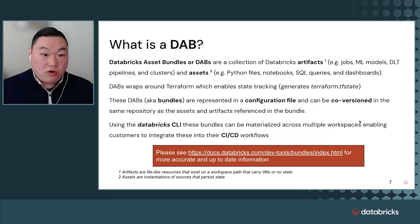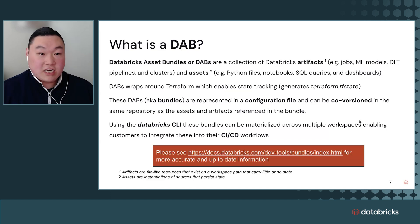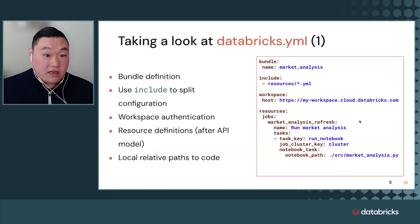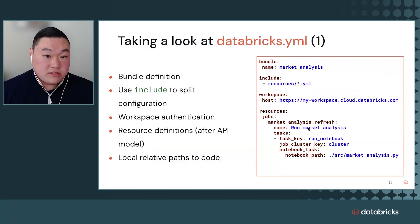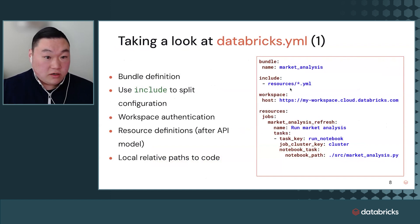Using the Databricks CLI, these bundles can then be materialized across multiple workspaces, enabling customers to integrate them into CI-CD workflows such as GitHub Actions. The Databricks YAML configuration at the top level includes the bundle definition name and uses the include argument to reference resources. For those familiar with Terraform, you can also use resources here, but you can divvy this up any way you like — maybe apps in one folder, models in another, workflows or jobs in another folder.